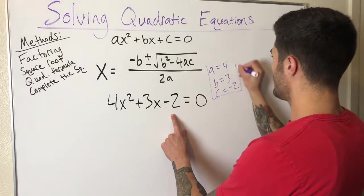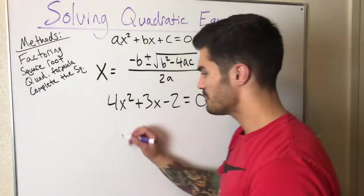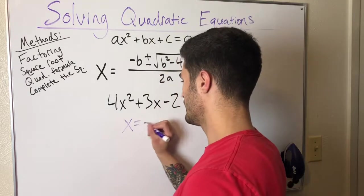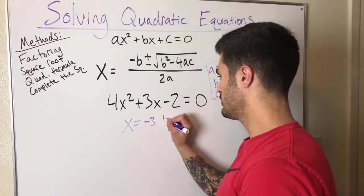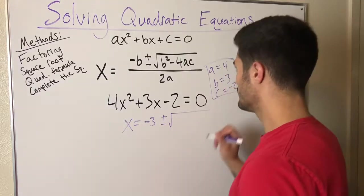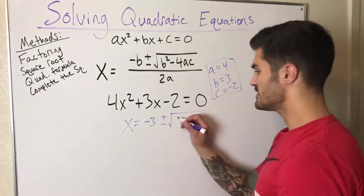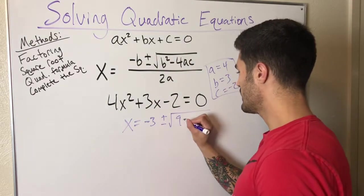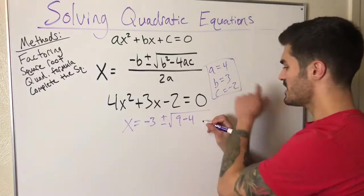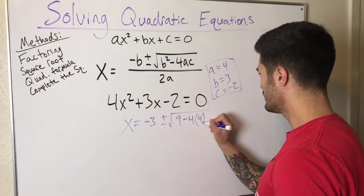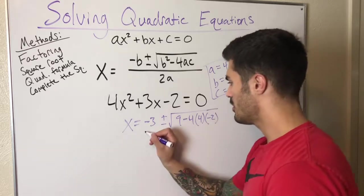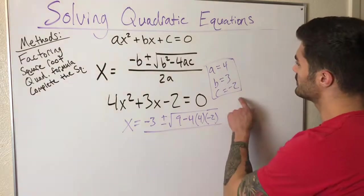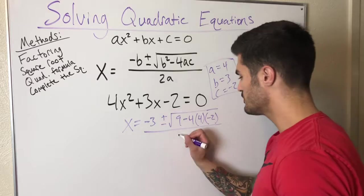I'm going to plug a, b, and c into our quadratic formula so we can solve for x. Negative b, that's negative 3, plus or minus the square root of b squared, that's 9, minus 4 times a, that's 4, times c, that's negative 2, all over 2a, which is 2 times 4, that's 8.